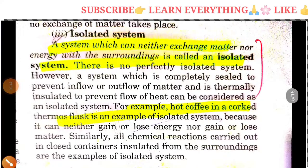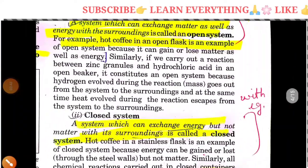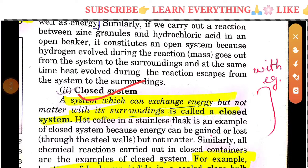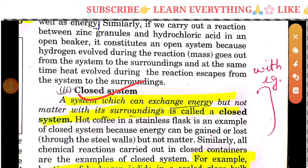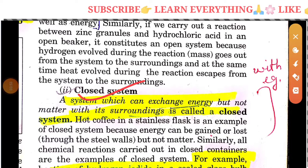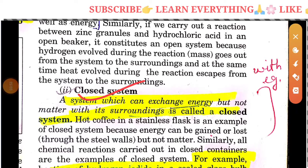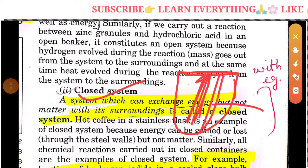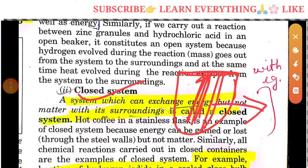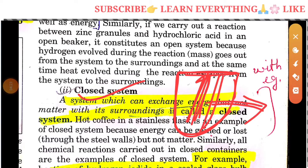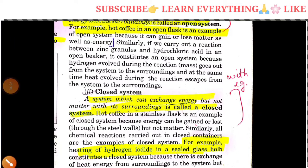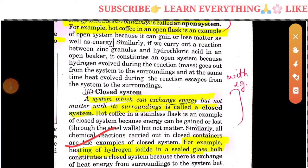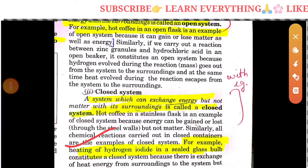A closed system is a system which can exchange energy but not matter with the surroundings. For example, the heating of hydrogen iodide in a sealed glass vessel is a closed system, because there is an exchange of heat energy with the surroundings, but matter exchange is not happening.